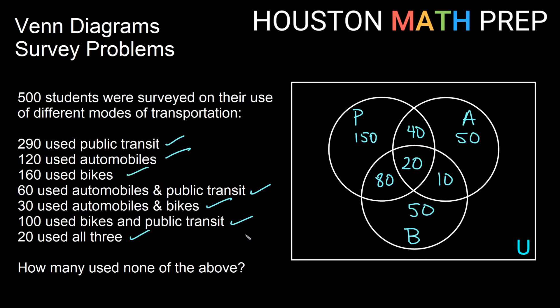So now it says, how many used none of the above? Well, we use the same idea that we used in the two circle Venn diagrams. Obviously, all of these numbers must add up to 500, including the one that we're missing out here, right? So in other words, 150 plus 40 plus 50 plus 80 plus 20 plus 10 plus 50 plus something out here, right, must equal 500. Well, how do we do that? Well, we'll just subtract all of this stuff from 500. If we add all of these up, we actually get 400 from all of this. So if we subtract 400 from our 500, we'll get that we'll need exactly 100 people out here that used none of the above. So our answer to this question here would be 100.